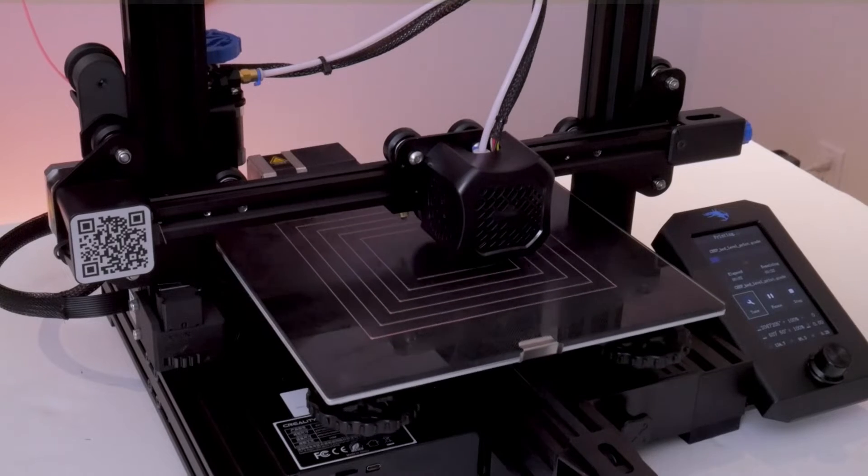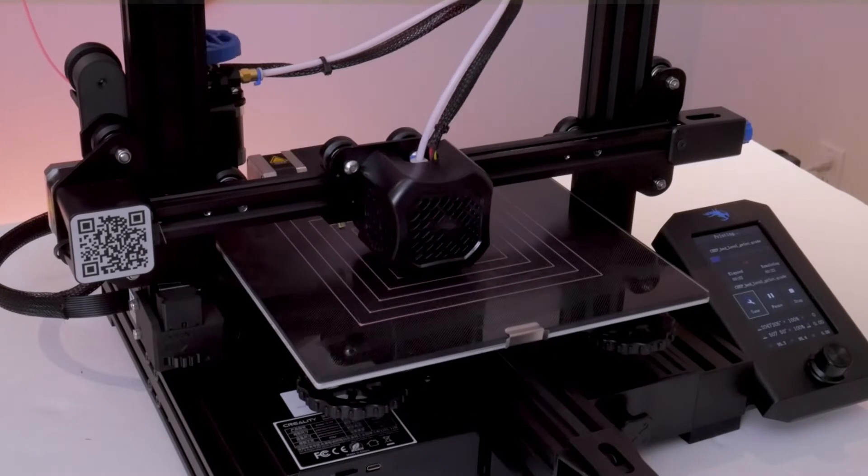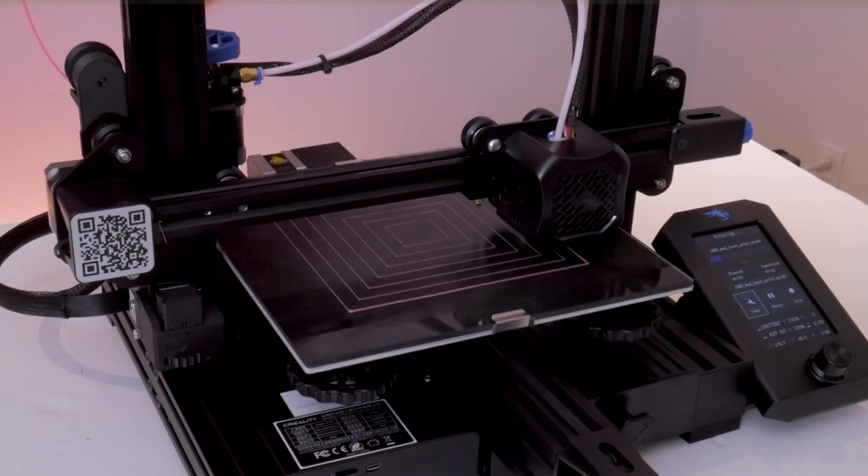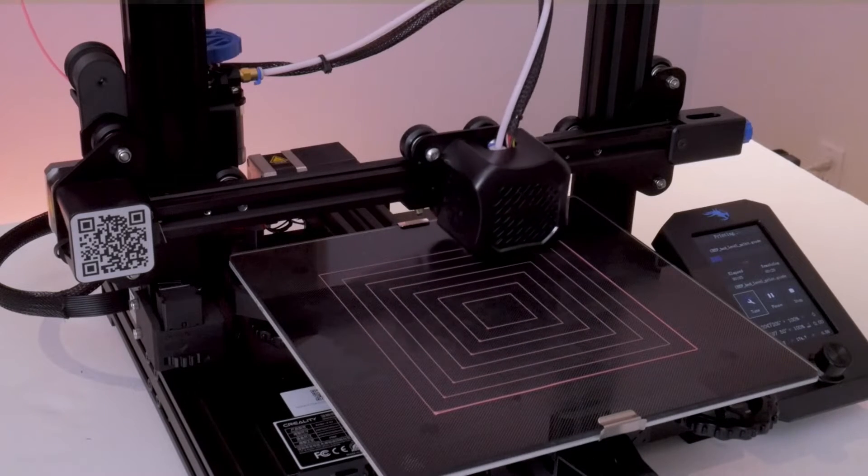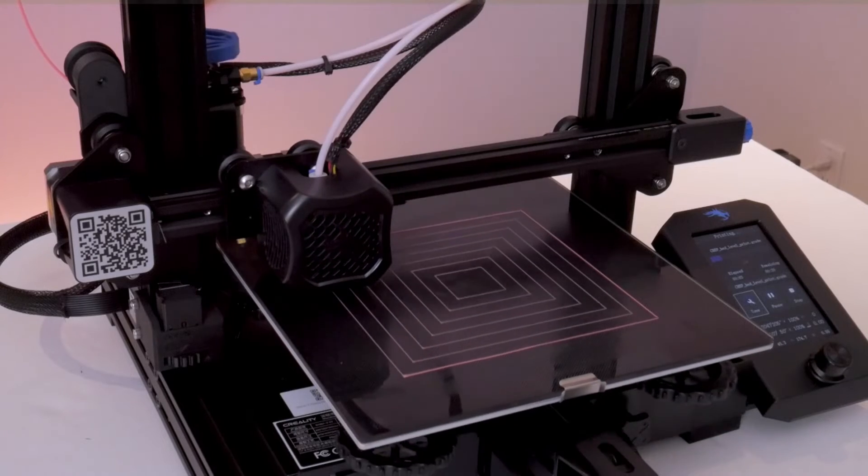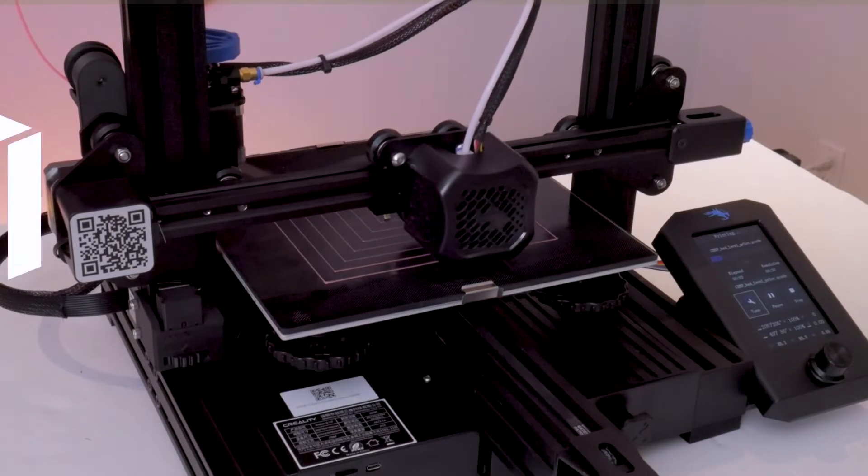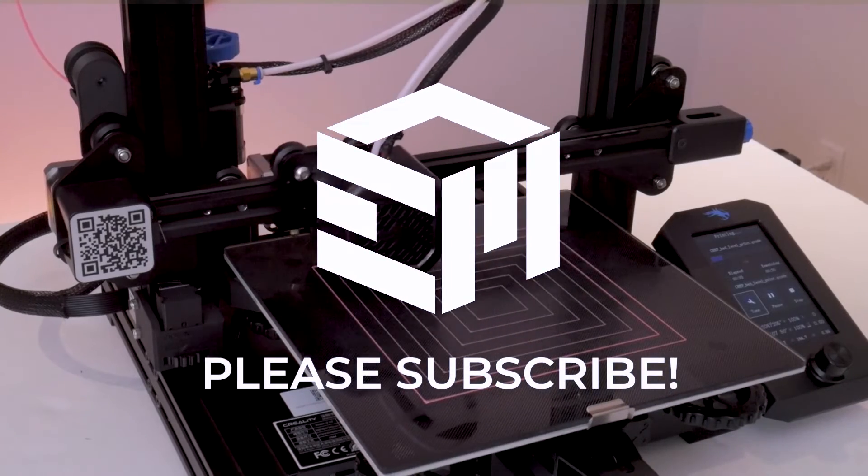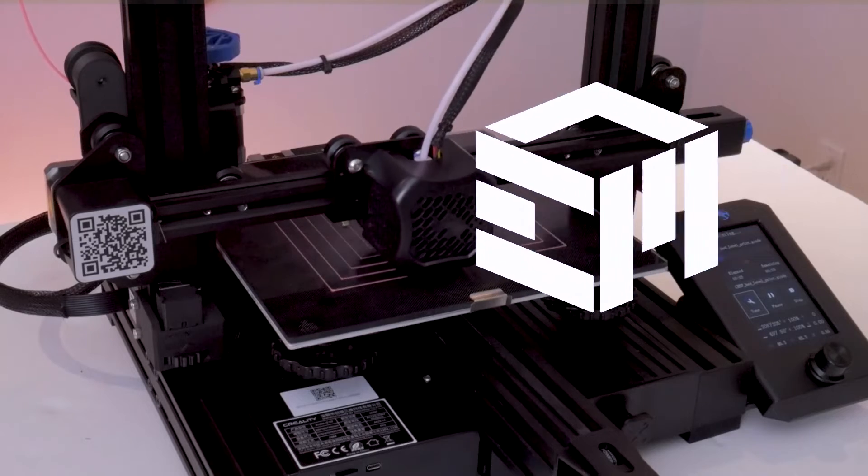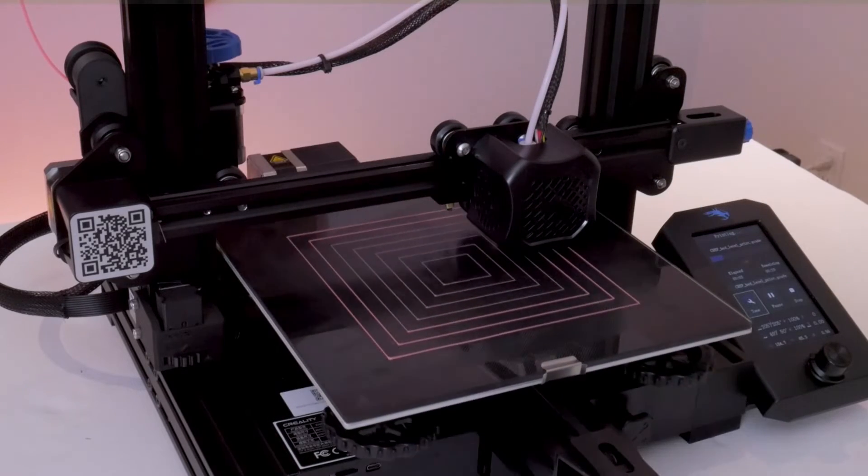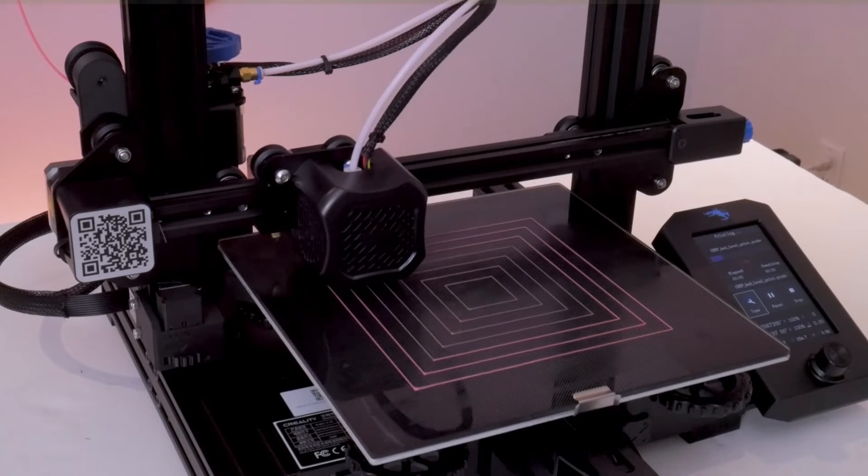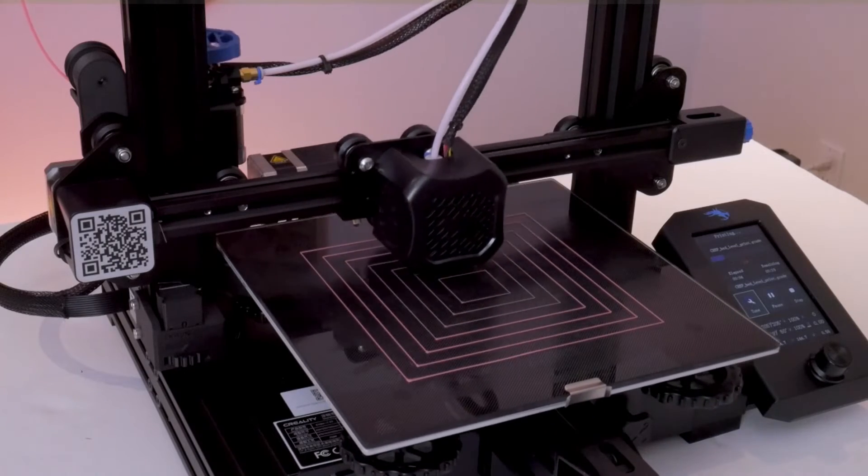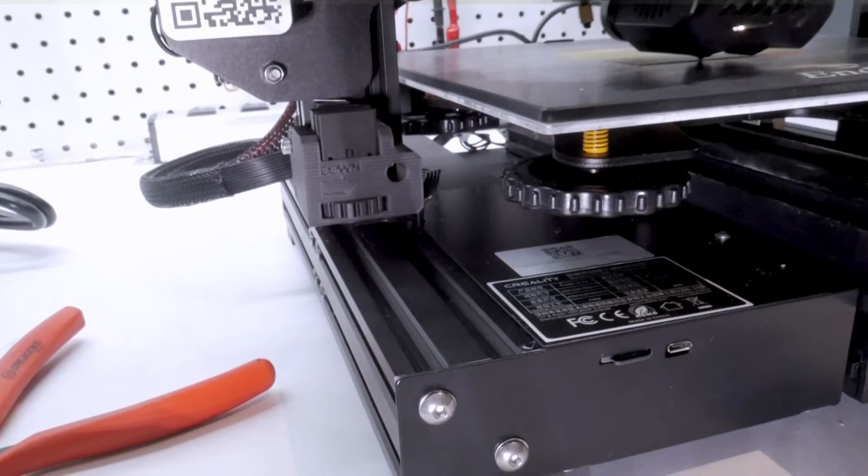Now you can run your favorite bed leveling test print to ensure the bed is level and your offset is correct. On this machine and many others you can also adjust the offset through software, but I don't like falling back on software compensations for things I feel should be correct mechanically. The philosophy of building a 3D printer is like building a nice strong home where you want a strong mechanical foundation - the mechanical setup of your printer is like your home's foundation.